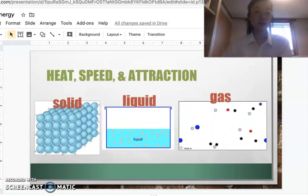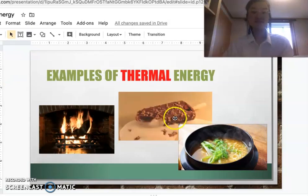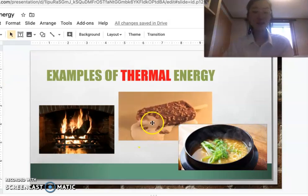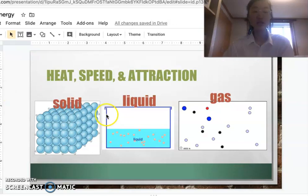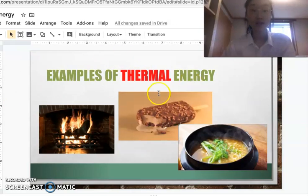For example, the ice cream, it started as a solid and then it quickly turns into a liquid form. So it switches from a solid to a liquid because of thermal energy, because of heat.